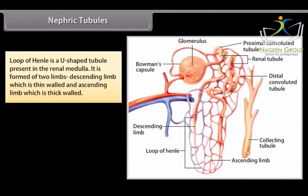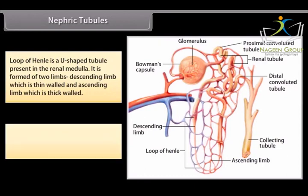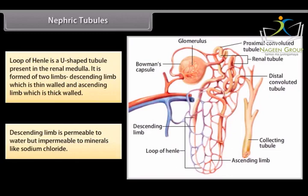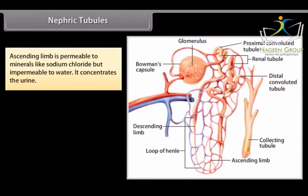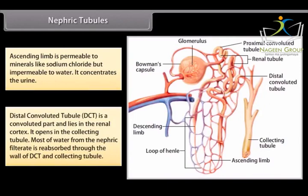The Loop of Henle is a U-shaped tubule present in the renal medulla, formed of two limbs: a descending limb which is thin-walled, and an ascending limb which is thick-walled. The descending limb is permeable to water but impermeable to minerals like sodium chloride. The ascending limb is permeable to minerals like sodium chloride but impermeable to water — it concentrates the urine. The DCT is a convoluted part lying in the renal cortex and opens into the collecting tubule, where most of the water from the nephric filtrate is reabsorbed.